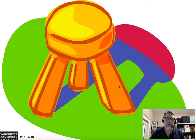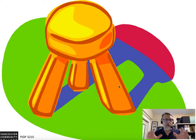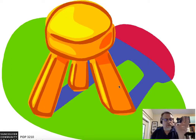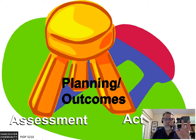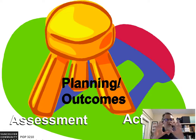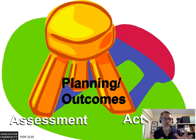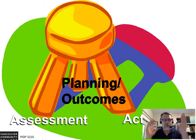When it comes to curriculum development, the model of the three-legged stool is often used because it requires a balance of three legs to make it work. One of the key outcomes of this course is finding an alignment between planning or outcomes, activities, and assessment. Curriculum development is really all about aligning these three elements and finding that balance — this is something you are going to do through this course and in your future curriculum development activities.